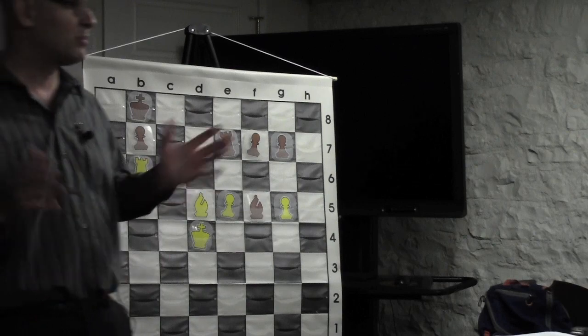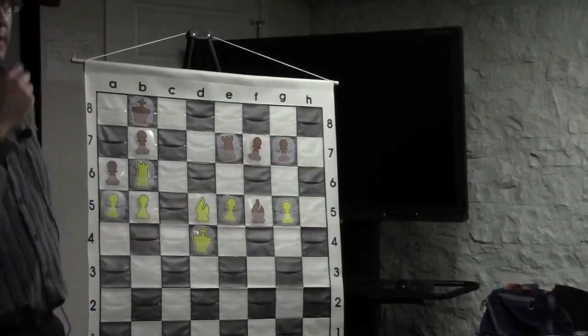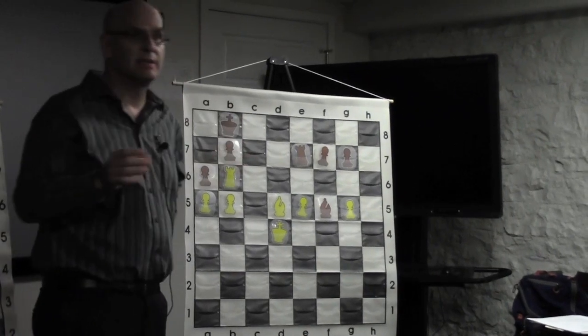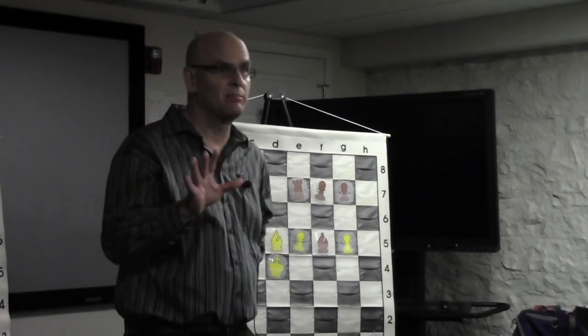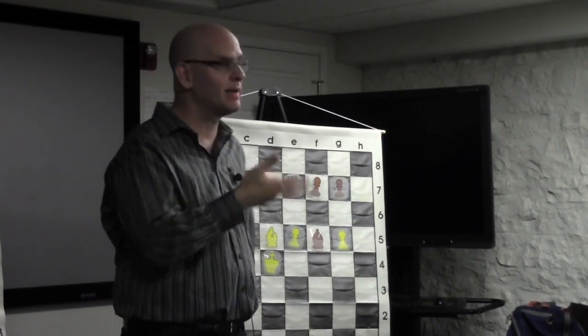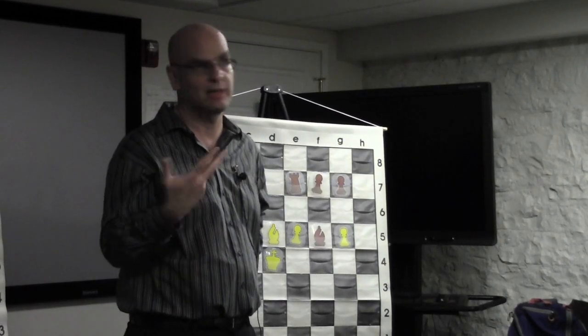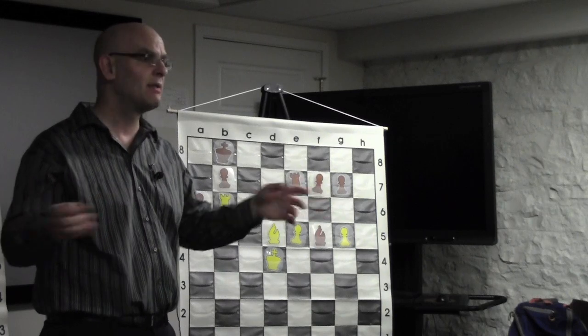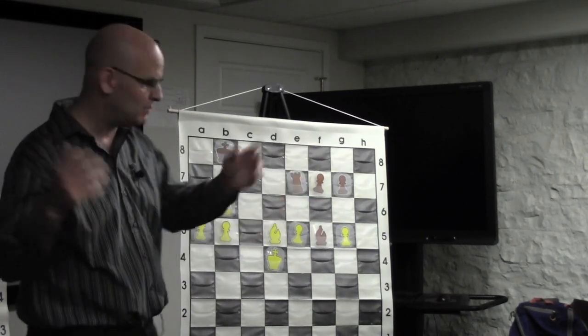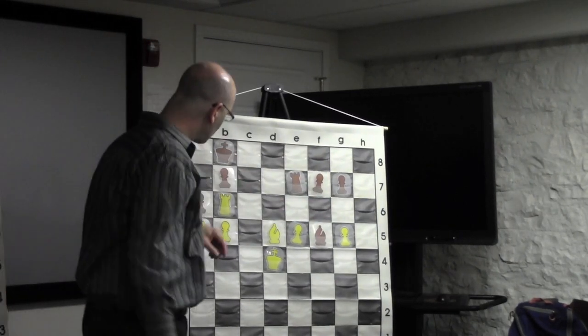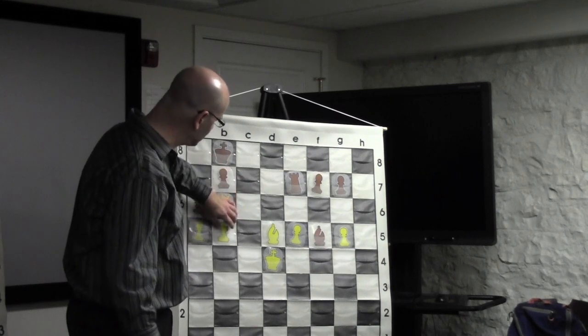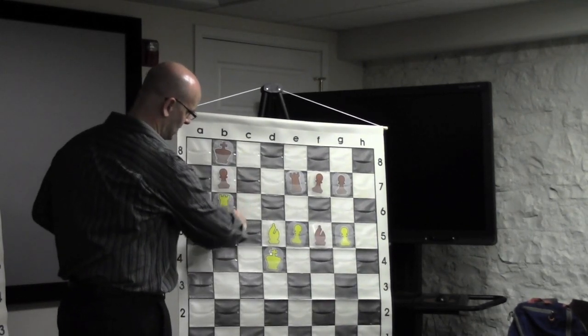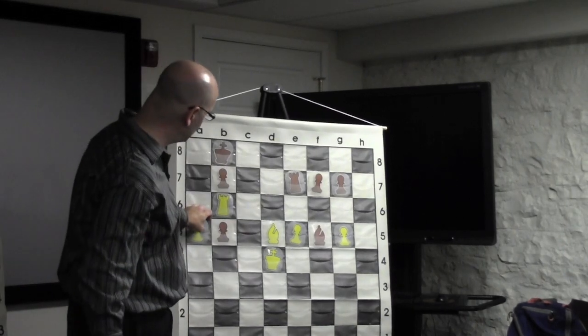B5. And black is actually losing by force now. My opponent obliged us by playing what I would think is the main line from this position, played the most natural move. So b5, he plays pawn takes pawn. I think that's what most of us would want to play. And now I play a6.